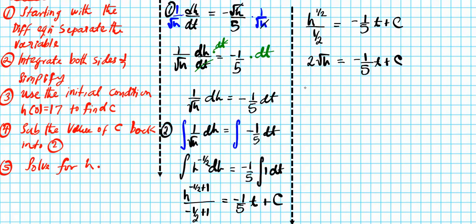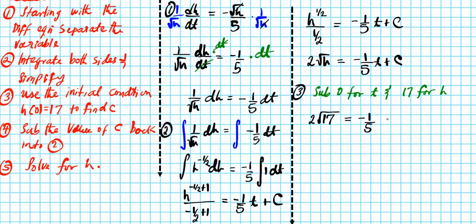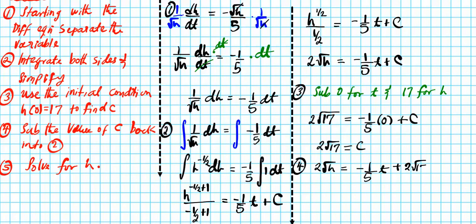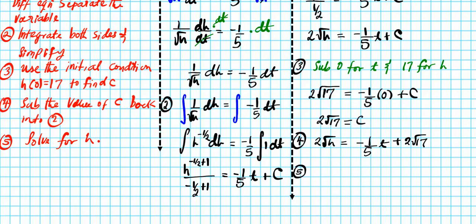We've accomplished step two — integrating both sides and simplifying. Now we need to find the value of C. Step three: substitute 0 for t and 17 for h. We have 2√17 = negative 1/5 · (0) + C. Negative 1/5 times 0 is 0, so C = 2√17. Then in step four, substitute this back into the result from step two: 2√H = negative 1/5 · t + 2√17.